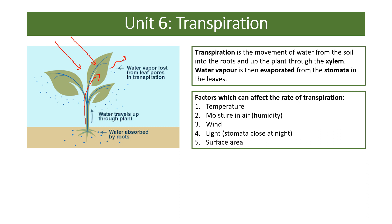Factors affecting transpiration include: high temperature — the hotter it is, the more water evaporates; humidity — if there's lots of water in the air, the gradient is reduced so less water evaporates; wind — blows water away, increasing transpiration; light — at nighttime stomata tend to close so less water is lost; and surface area — cacti, for example, have very small leaves or spines instead of leaves, reducing surface area to reduce transpiration rates.